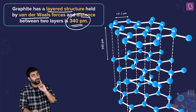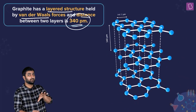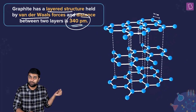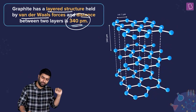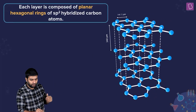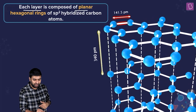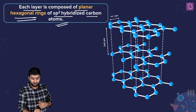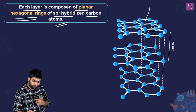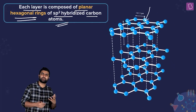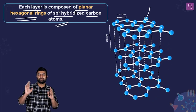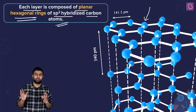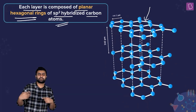The distance between two layers is 340 pm — remember it for now, I'll come back to it. Each layer is composed of planar hexagonal rings of sp2 hybridized carbon atoms. You might ask: each carbon is forming only three bonds, so where is the pi bond?